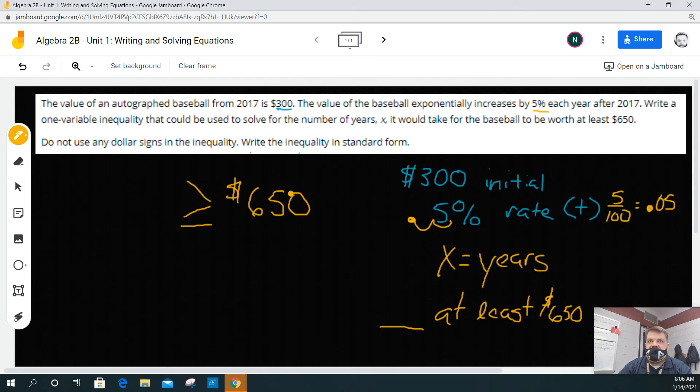Because I could say $650 is at least $650, and it's true. I could say a million is at least $650, and it's true. Now, here's the other issue here. You're going to say one plus the rate, and that's going to be raised to the number of years. And then you're going to have your initial condition here.